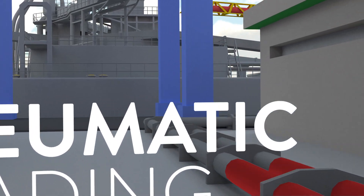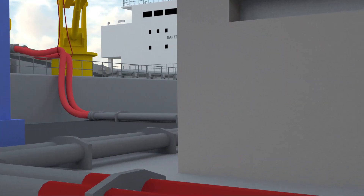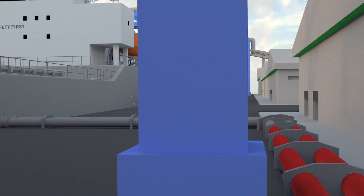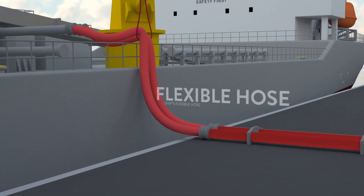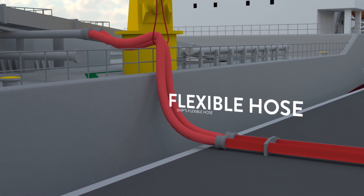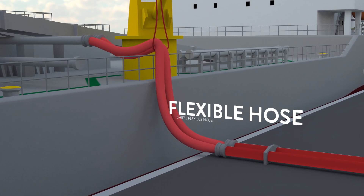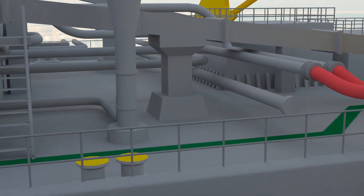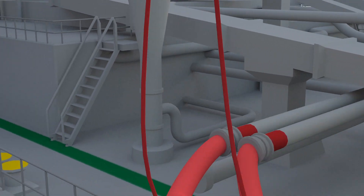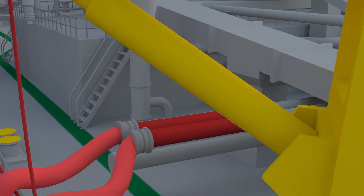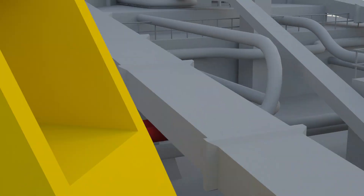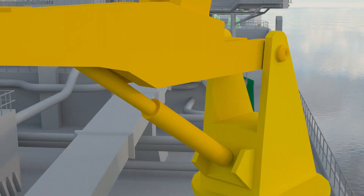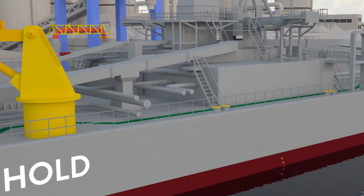Pneumatic Loading. From silos, a flexible hose is installed to the ship's pneumatic loading pipe. Cement is pushed through the pipelines by compressed air. The pipelines bring the cement to each respective cargo hold.